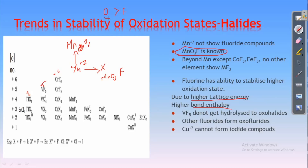Oxygen has a greater ability to show stable compounds with a higher oxidation state than fluoride. Why? Because of the formation of multiple bonds — that is, oxygen will form a pπ-dπ bond with a metal having a higher oxidation state. That is, oxygen's 2p orbital will laterally bond with the metal's 3d orbital. Because of this reason, oxygen shows greater ability to form stable compounds than fluorides.